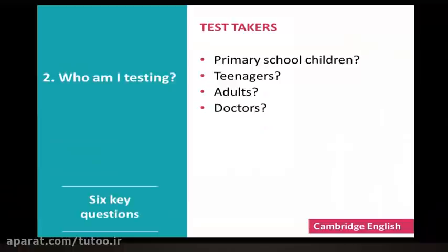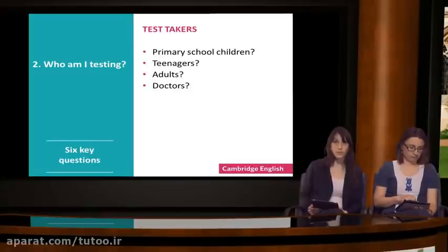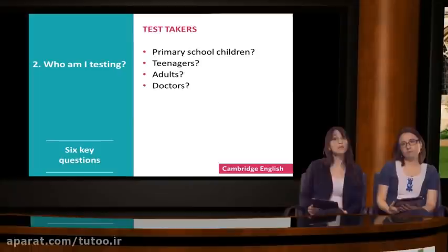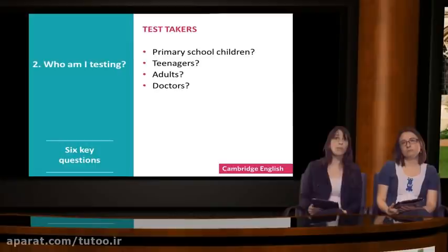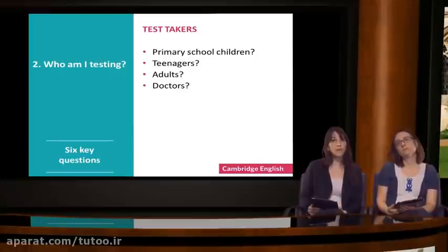The second key question is: who am I testing? Is it primary school children, teenagers, adults, airline pilots or doctors? The key term here is test takers. The reason this is so important is because the test has to be appropriate for the test takers it is aimed for. For example, if our test takers are primary school children, we might want to give them more interactive tasks or games to test their language ability. But we might not necessarily give such tasks to adult learners. Or we might use role plays with doctors when testing their listening skills, but use more lectures and monologues with students at university in order to make the tasks more relevant to our test takers.